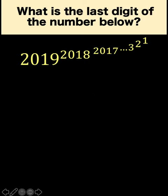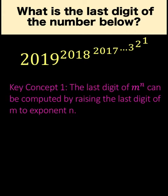Now, let's solve this problem together. There are three steps and three key concepts that we are going to use. The first one is this: the last digit of a certain number in exponential form m raised to n can be computed by raising the last digit of m to exponent n.